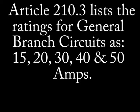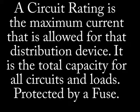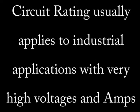Let's get started. Article 210.3 identifies the rating for general branch circuits as being 15, 20, 30, 40, and 50 amps. Amperages of 60 amps or greater will determine the circuit rating. Make a note of this fact. A circuit breaker or overcurrent device is not the same as a circuit rating. In some cases the main service panel can act as a circuit rating, but typically the term is used in industrial applications for very high voltages and amperages.